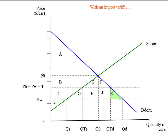What about our other loss, area K? Area K refers to cars that we used to buy under free trade, but once the tariff is in place we no longer buy those cars — we consume fewer cars in Australia. The consumer surplus we were getting from those cars — the area under demand, above the price PW we were paying, over those units — is area K. Once the tariff is in place, we're no longer consuming those cars, so we've lost that consumer surplus. Area K is gone — it's another deadweight loss.